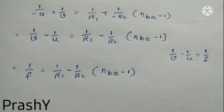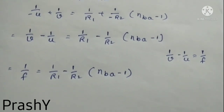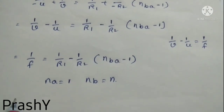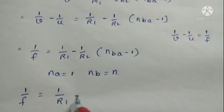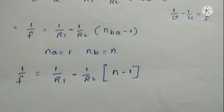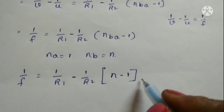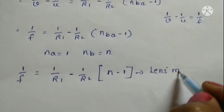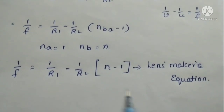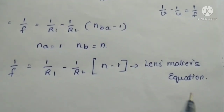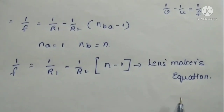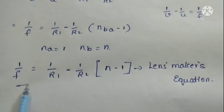If the surrounding medium is air, then n_a = 1 and n_b becomes n (the absolute refractive index of the lens). The equation simplifies to: 1/f = (n − 1)(1/R1 − 1/R2). This is the Lens Maker's Formula, or Lens Maker's Equation. This equation is used only when the lens is kept in air and can be applied for any thin lens. Remember, while using this formula, you must always apply sign convention.